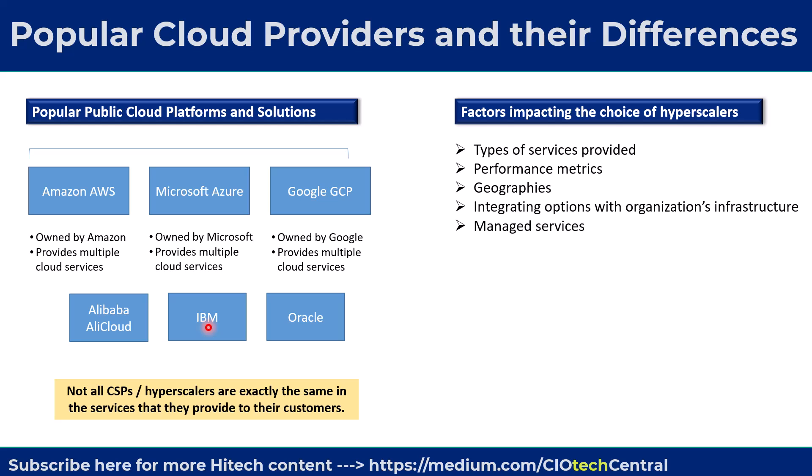CSPs can also differ on the levels and quality of management they provide when managing their services. For example, one service provider may provide an easier way for its users to manage how they provision infrastructure services, how they scale them, how they are charged, and so on.